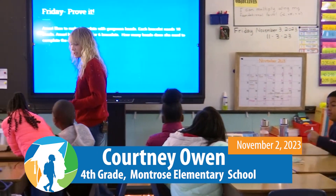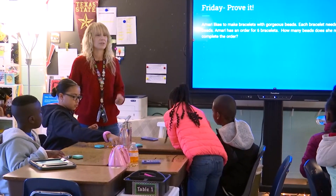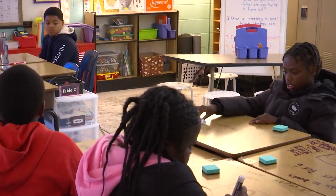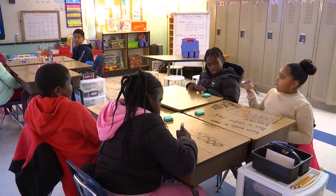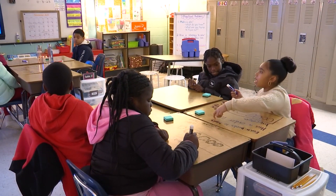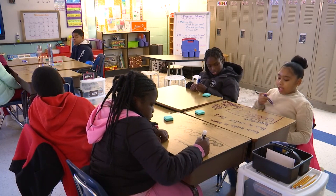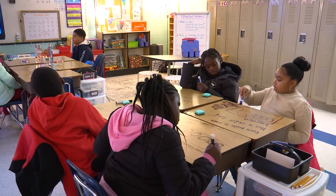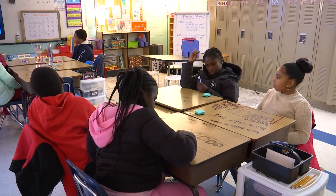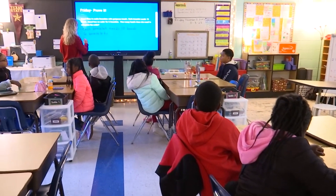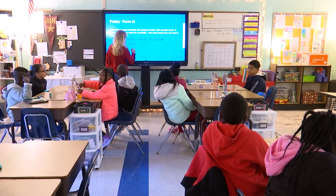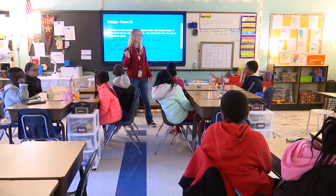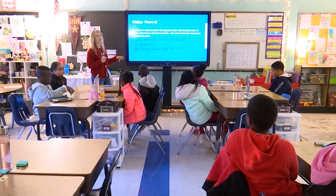Caps on markers, markers down. All right, I'm going to start with the back table. Did you come up with a plan before you attacked the problem? Yes. All right, McKinley, what did you do? First, I wrote something down. What did you write? I wrote: each bracelet needs ten beads, and she has an order for six bracelets, and how many beads does she need to complete it? So you chose multiplication. What made you think that this was multiplication?